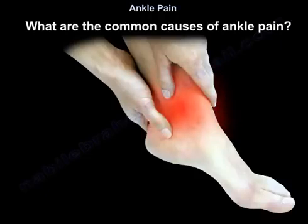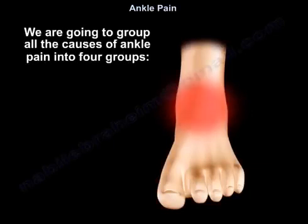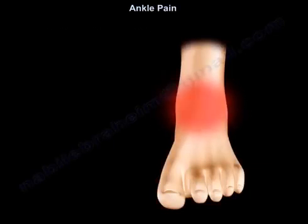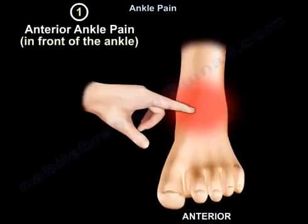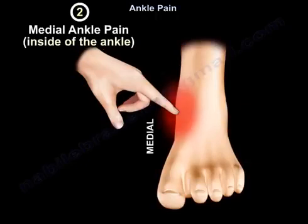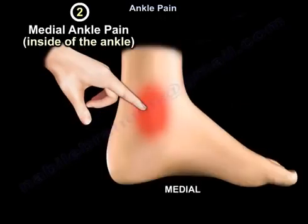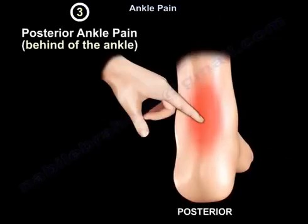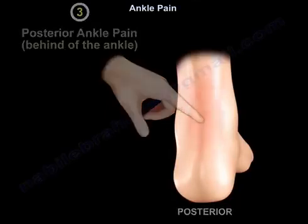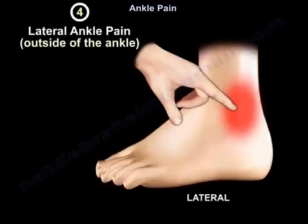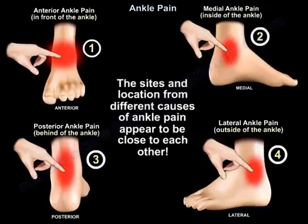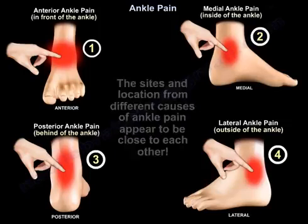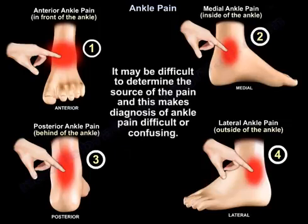The common causes of ankle pain can be grouped into four groups: one group in front of the ankle or anterior to the ankle; the second group medial to the ankle on the inside; the third group behind the ankle or posterior to the ankle; and the fourth group lateral to the ankle on the outer side. The sites and locations of different causes appear close to each other, which can make diagnosis difficult or confusing.